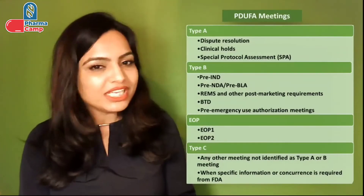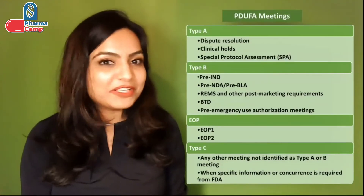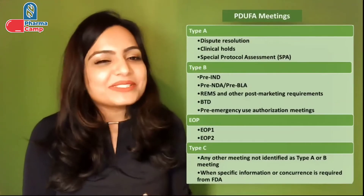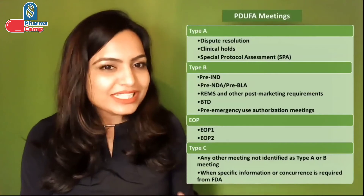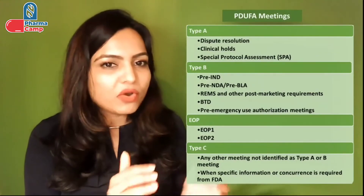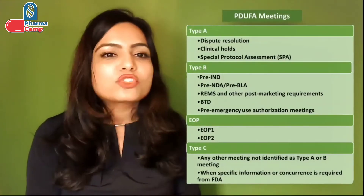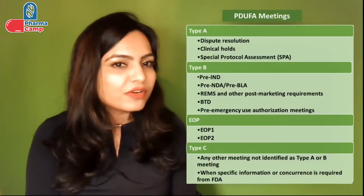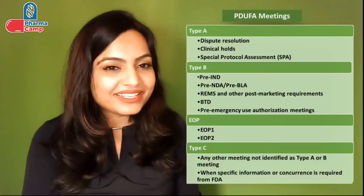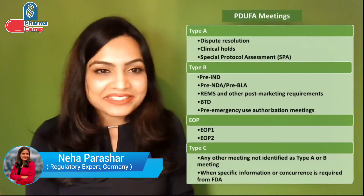Now let's come to the next category — End of Phase meetings, also called EOP meetings. As the name itself suggests, these meetings are performed after the end of each phase. If it is after Phase 1, it is called EOP 1; if it is after Phase 2, they are called EOP 2. Then here comes the next category — Type C meetings.